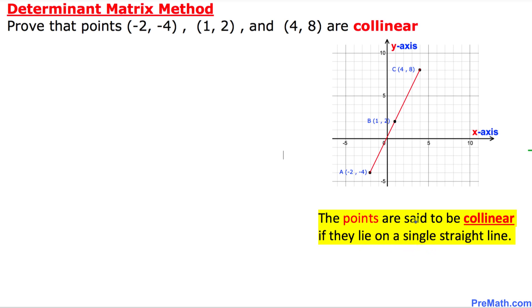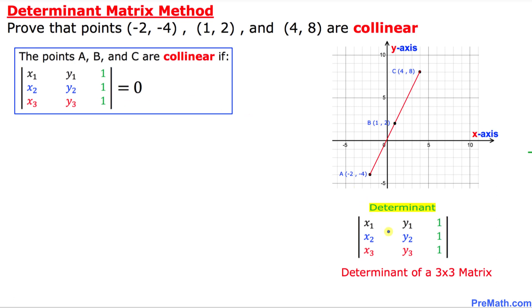Just keep in your mind, to prove that the points A, B, and C are collinear, we will be using this well-known fact. It states that these points are collinear if the determinant of this 3x3 matrix must be equal to 0. And once again, this 3x3 box is called a determinant of a 3x3 matrix.